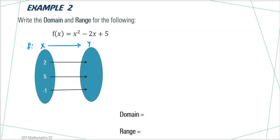Can you tell me what is the domain here? Correct. The domain will be the numbers in the first set: 2, 5 and minus 1.